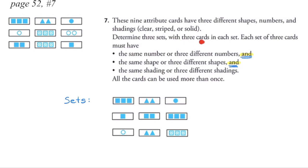We now have our three sets, each containing three cards. This is what it means when cards can be used more than once — the two solid triangles appear in both the second and third sets. We began with one attribute, checked whether we had three cards to satisfy each attribute, eliminated options that didn't work, and used deduction to find combinations fitting all three characteristics.